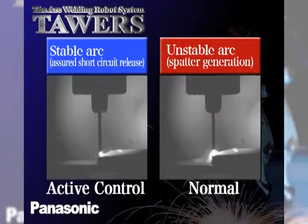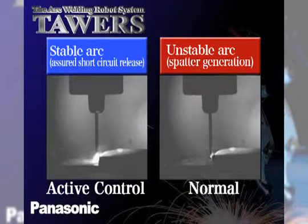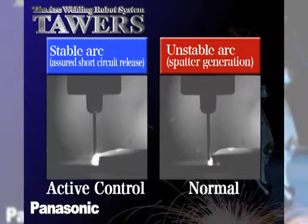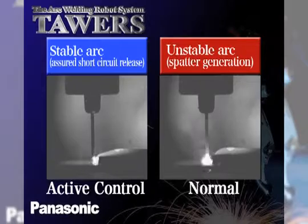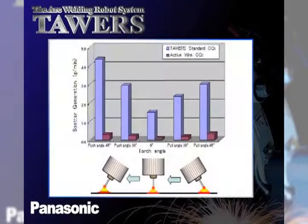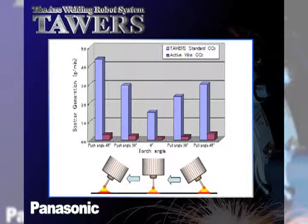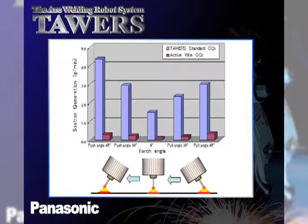This new process allows the user the ability to handle more variations than a conventional process would allow. The slide to the right also shows the versatility of the welding process in another key area: torch angle compromise.